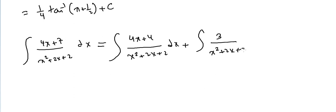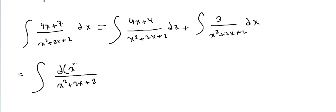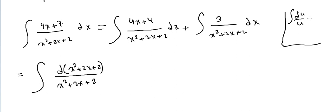For the first part, since the derivative of (x² + 2x + 2) is (2x + 2), and we have (4x + 4) = 2·(2x + 2), this gives 2·ln|x² + 2x + 2|. The rule used is: integral of du/u = ln|u| + C.